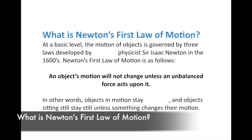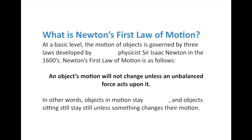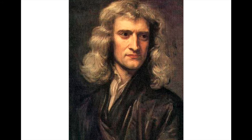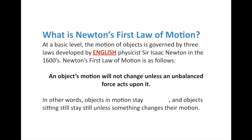At a basic level, the motion of all objects in the universe are governed by three basic laws developed by English physicist Sir Isaac Newton in the 1600s. He also invented calculus and is considered one of the greatest scientists of all time. With more research, observation, and technology, we know Newton's laws don't govern all motion in all ways, so what we're learning is Newtonian mechanics — the motion of objects as described by Sir Isaac Newton.